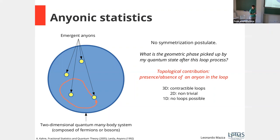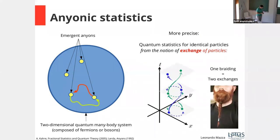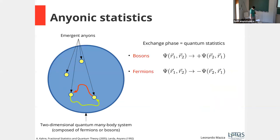You see why this argument fails in 3D: all loops are contractible in 3D, so there's no real notion of putting a particle around another. In 1D, loops are not possible because particles can't pass each other. The relevant quantity is actually the phase picked up by exchanging two anyons. Doing this exchange twice is topologically equivalent to going around once. If it is a boson, the wave function picks up plus one; if a fermion, it picks up minus one.